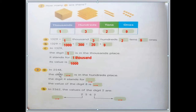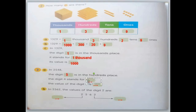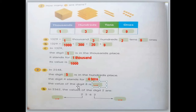Now question 3A: in 2,548, what is the digit in the hundreds place? Remember — ones, tens, hundreds, thousands — so the hundreds digit is 5. The digit 4 stands for 4, and its place is tens, so its value is 40. How about the value of the digit 8? 8 is in the ones place, so the value is only 8.